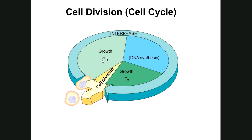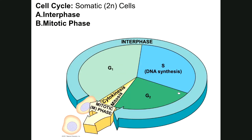When the cell is going through G1 phase, it's preparing to enter S phase, where DNA synthesis — more commonly known as DNA replication — occurs. That's why they call it S phase. Once DNA replication is completed, the cell will enter G2 phase. During G2 phase, the cell is preparing to enter cell division — in other words, preparing to physically divide from one cell into two cells, each with its own nucleus.